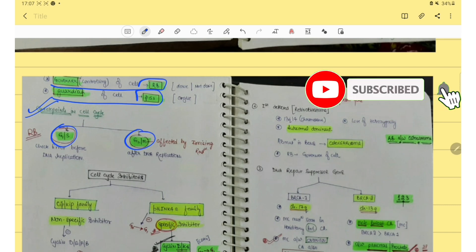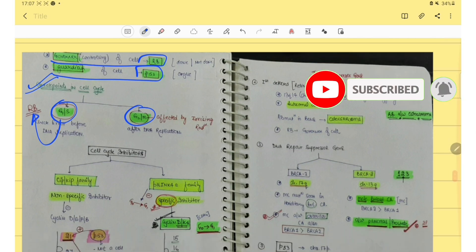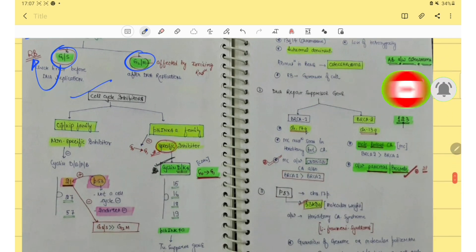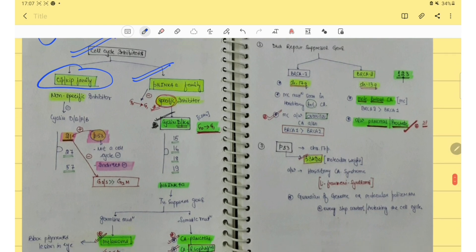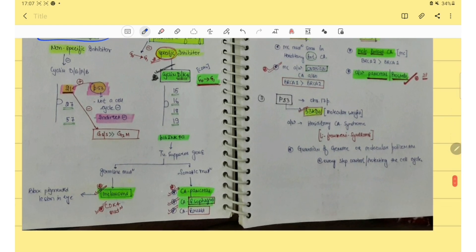Then cell cycle inhibitor. In this we have the CIP-KIP family and P16-INK4A family. We should know about the P16-INK4A family examples that are CA pancreas, CA esophagus and CA breast. In germline mutation the example is melanoma.